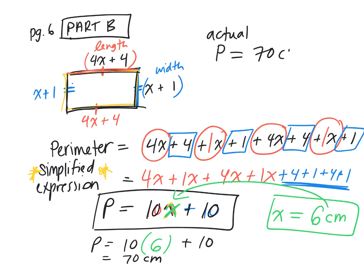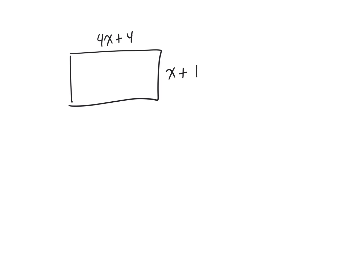So now we can say the actual perimeter is equal to 70 centimeters, only because I gave you that information. If I tell you what x is equal to you can actually solve it. So again, if these are dimensions, this was the length and this was the width, how would we find the area if we know that x is equal to six?